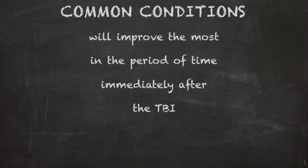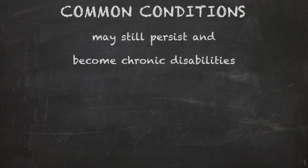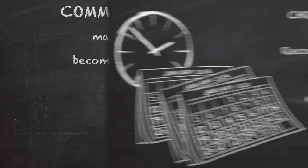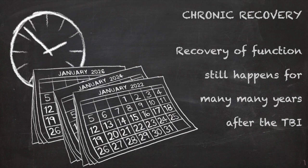Common conditions will improve the most in the period of time immediately after the TBI. Some problems may still persist and become chronic disabilities. Importantly, this is called the chronic recovery phase, which means that even though problems have persisted and even though recovery may be slower, recovery of functions can still happen for many, many years after the TBI.